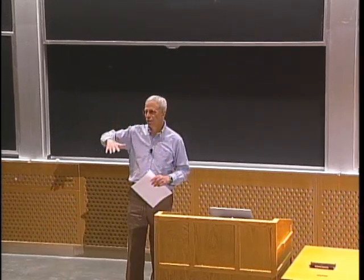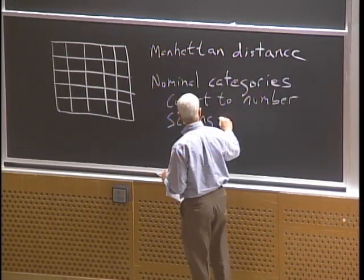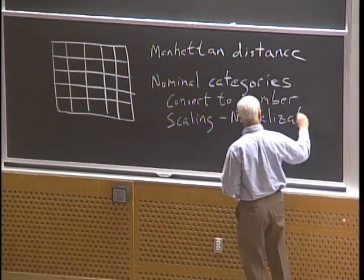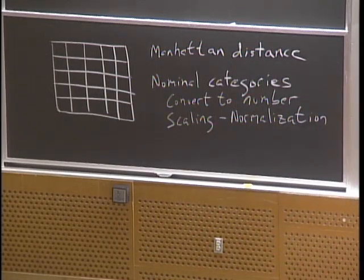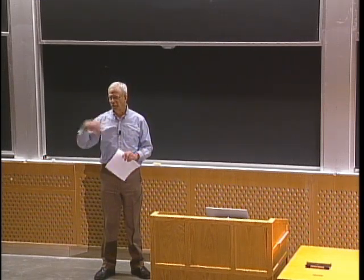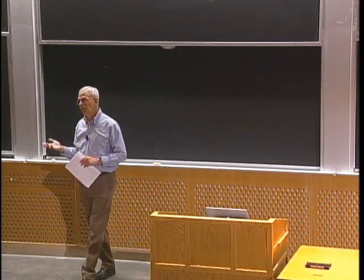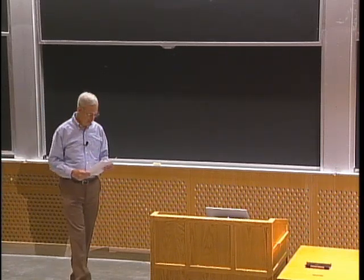Once we've converted things to numbers, we then have to go back to our old friend of scaling, which is often called normalization. Very often we try to have every feature range between 0 and 1, so that everything is normalized to the same dynamic range and then we can compare. Is that the right thing to do? Not necessarily, because you might consider some features more important than others and want to give them a greater weight.